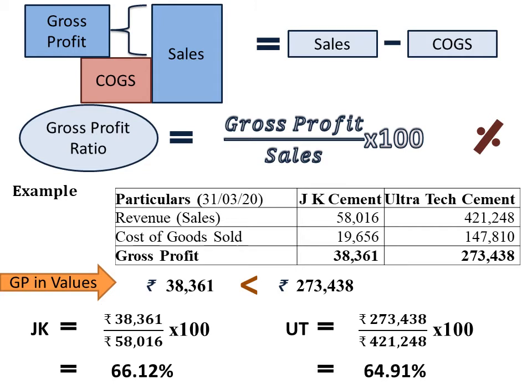In percentage it is showing exactly the opposite result. Gross profit ratio of J.K. Cement is greater than Ultra Tech Cement. That means the capacity of J.K. Cement Limited to earn gross profit on sales is more than Ultra Tech Cement.